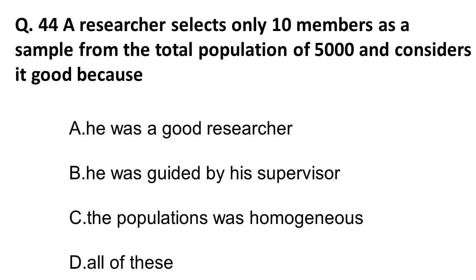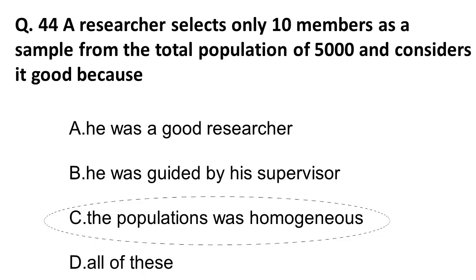Question forty-four: A researcher selects only 10 members as a sample from a total population of 5000 and considers it good because — the correct answer is that the population should be homogeneous. When sample size is low, it needs to be homogeneous. For example, taking 10 students from the same grade means their age and thinking are similar — that is a homogeneous sample.